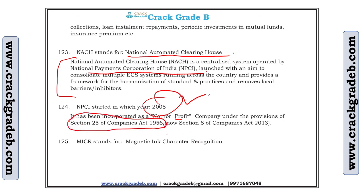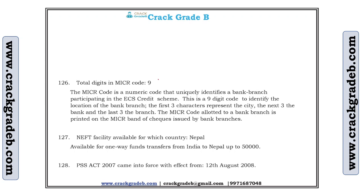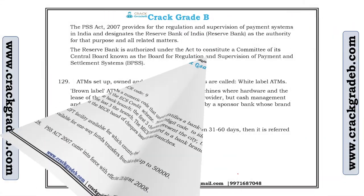MICR stands for Magnetic Ink Character Recognition. You can see some black dots on cheques — those are MICR characters. MICR code is a nine-digit code. NEFT facility is available for Nepal up to 50,000 rupees, as already mentioned. The PSS Act — Payment and Settlements Systems Act 2007 — came into force with effect from 2008. This is a very important point.